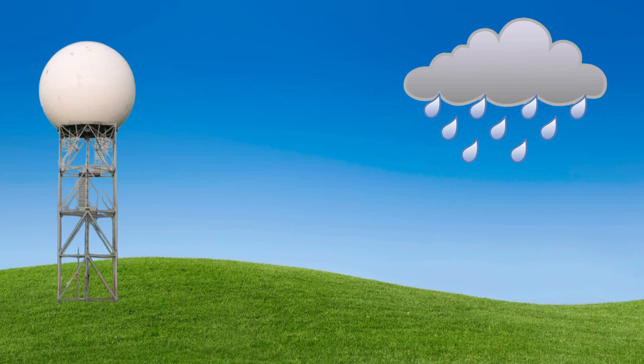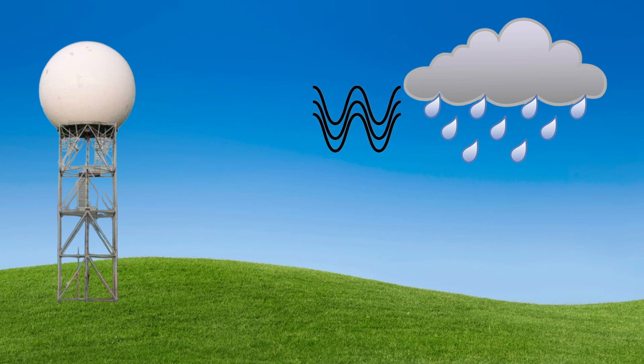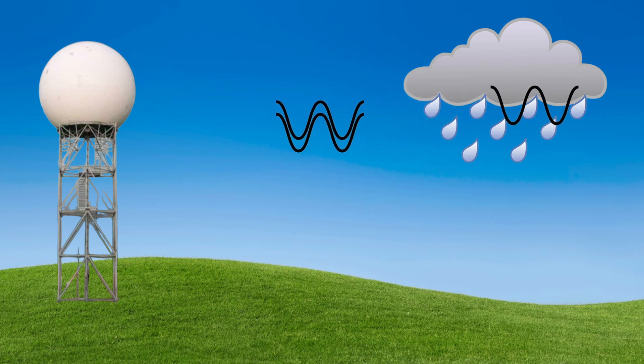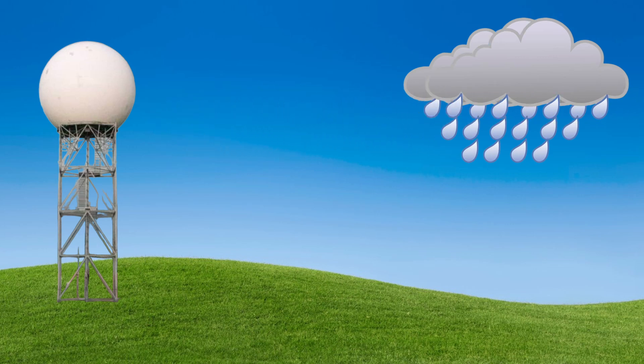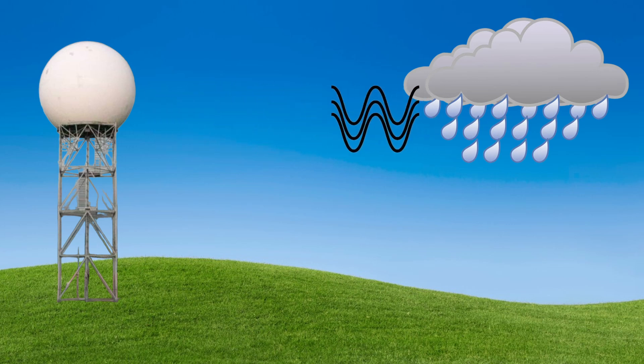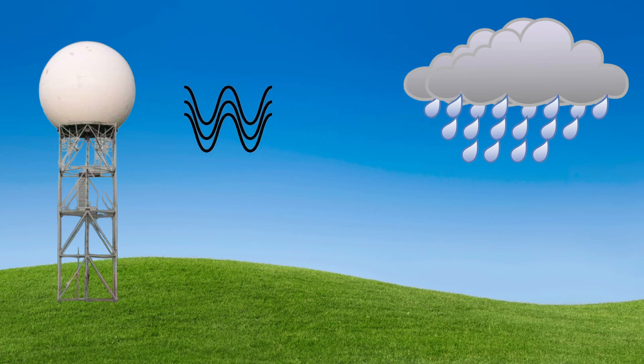Radars can calculate the amount of rain in a storm by sending out radio waves, and if the waves hit something, they'll be bounced back, telling the radar that something is out there. When rain is heavier in a storm, the falling raindrops are more densely packed, leading to more radio waves being bounced back to the radar.